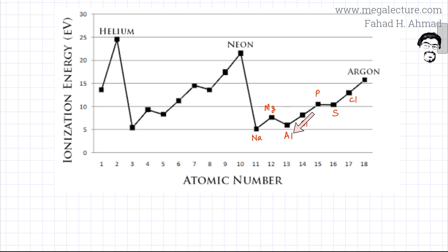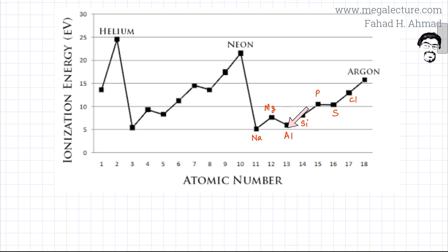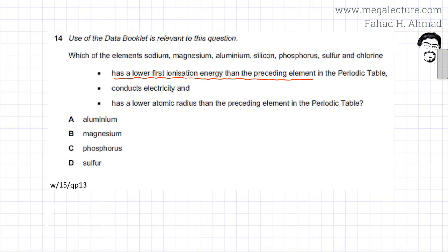So one option is aluminium. The other option is sulfur. Sulfur has a lower first ionization energy compared to phosphorus. There are dips in ionization energies across the period as you move to group 6 or group 3. So it's either going to be aluminium or sulfur. It's either going to be aluminium or sulfur.